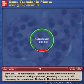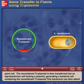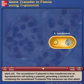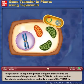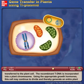The recombinant Ti plasmid is then transferred into an Agrobacterium cell lacking a plasmid, generating a bacterial cell containing the recombinant Ti plasmid. This bacterium can then attach to a plant cell to begin the process of gene transfer into the chromosome of the plant cell. The T-DNA is replicated within Agrobacterium tumefaciens, and only a copy of the T-DNA is transferred to the plant cell.